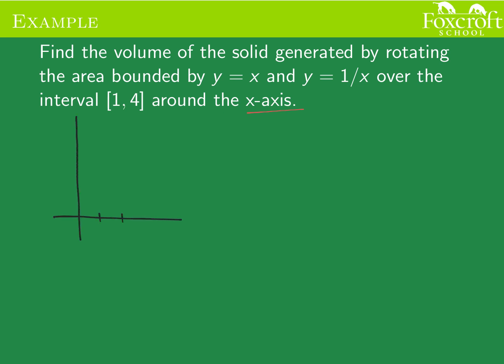From 1 to 4, y equals x is going to be this diagonal line and 1 over x is going to be this diagonal line, and we're doing it from 1 to 4. This is this area.